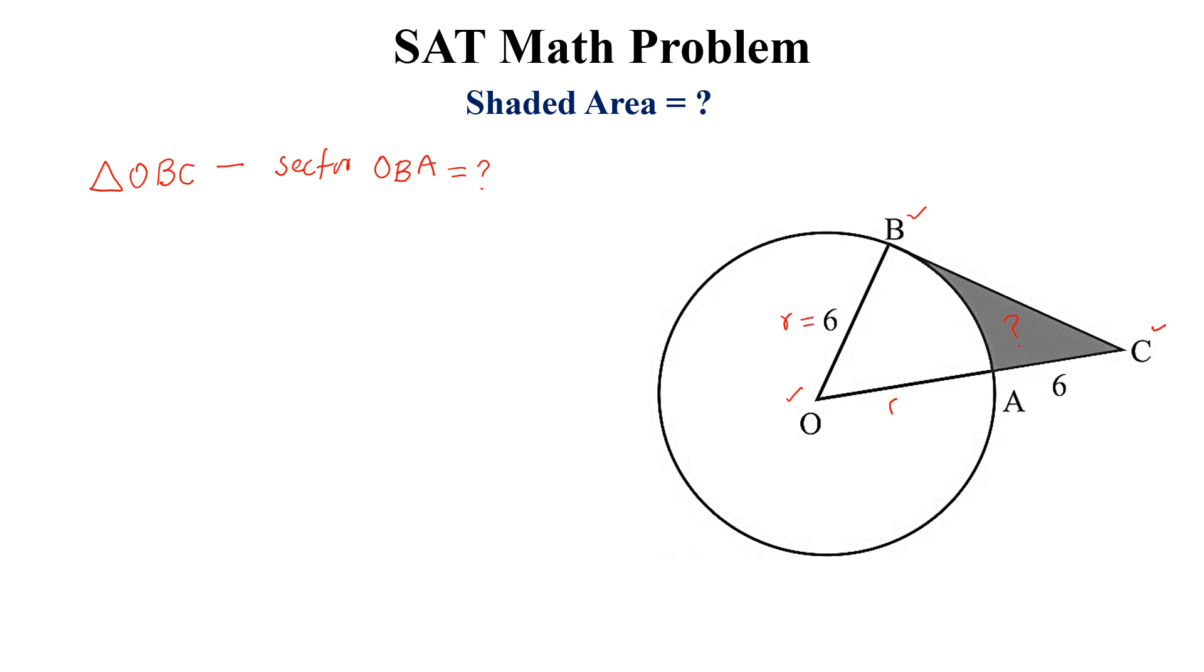We know that this length is 6, so this will also be 6. If this is 6, then this length will be 12. Let this angle be theta. And we know that OB is perpendicular on BC, so this is a right angle triangle.